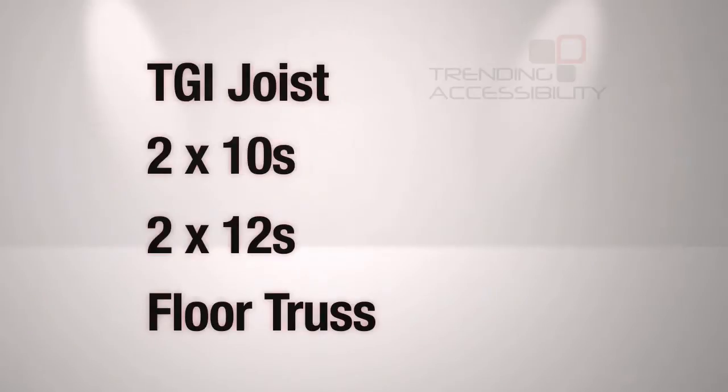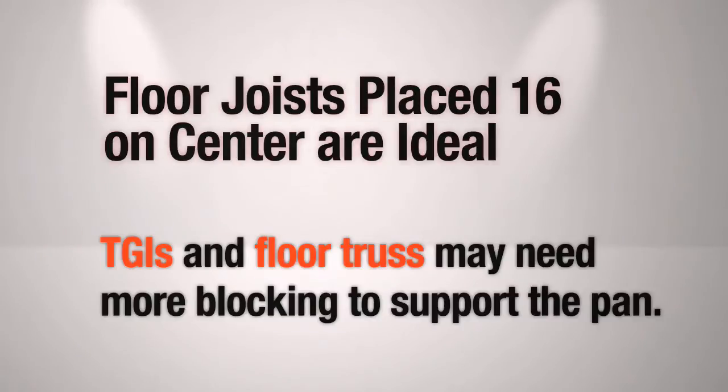You'll be more likely to find TGI joists, 2x10, or 2x12 dimensional floor joists, and floor trusses. Floor joists placed 16 on center are ideal.